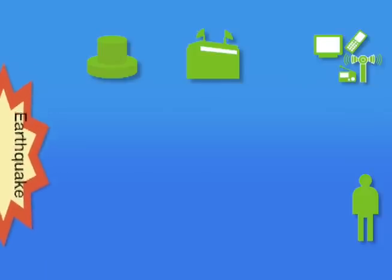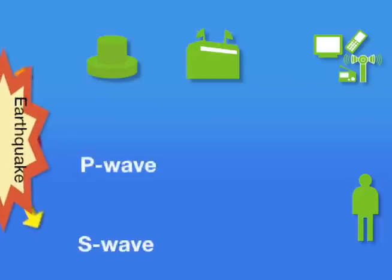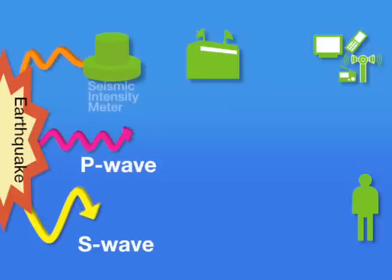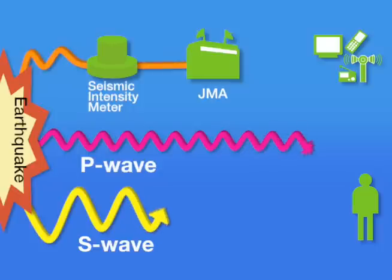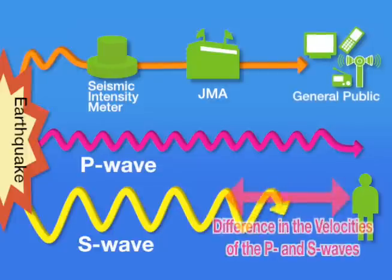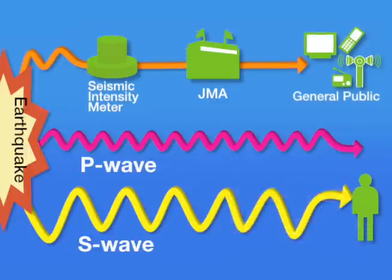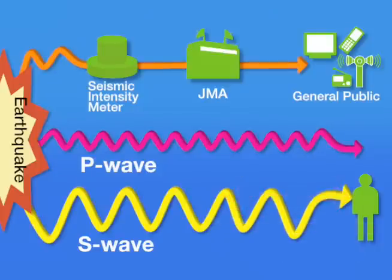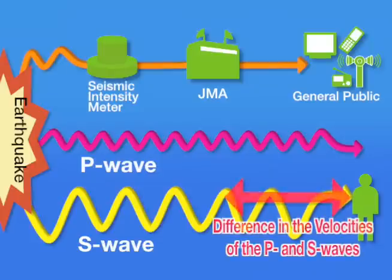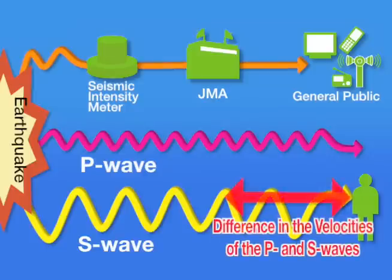When an earthquake occurs, seismic waves propagate from its focal point. Such waves mainly consist of primary waves and secondary waves. S waves propagate more slowly than P waves, but move with higher amplitude and cause greater damage. P waves travel at approximately 7 km per second, while S waves travel at approximately 4 km per second. The Earthquake Early Warning makes use of this velocity difference to warn the public of imminent violent shaking caused by the S waves.